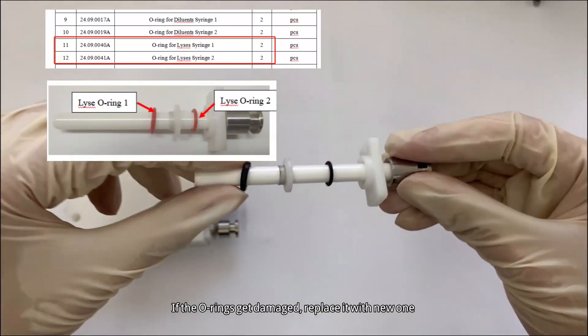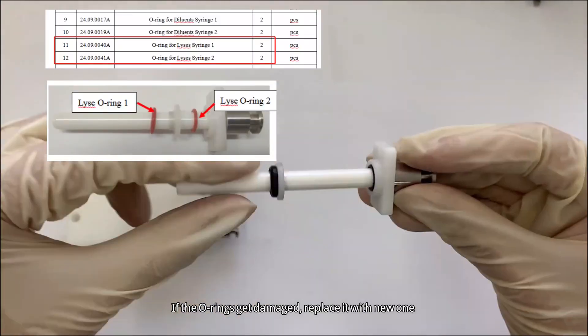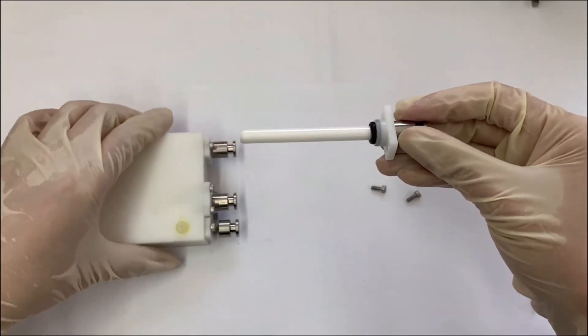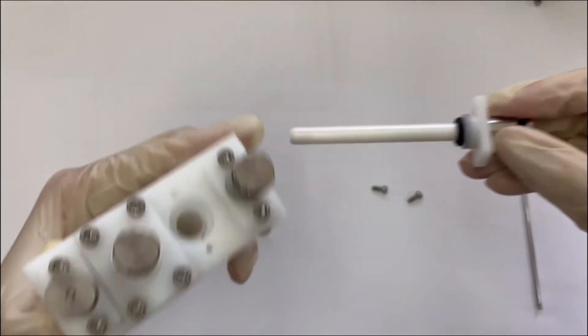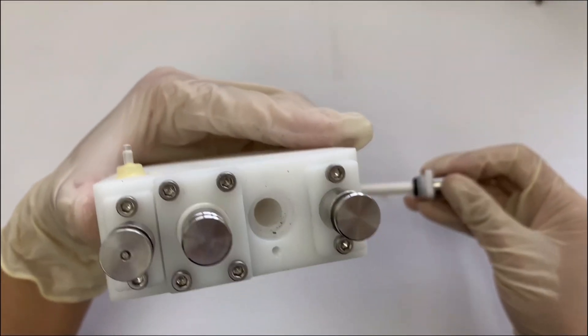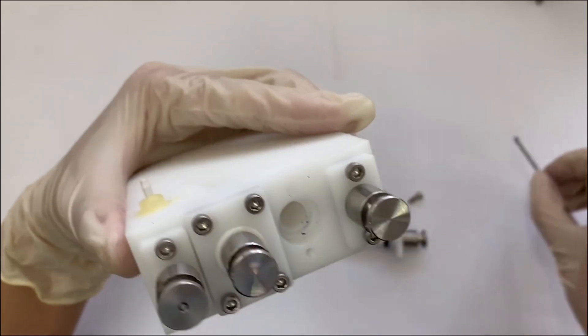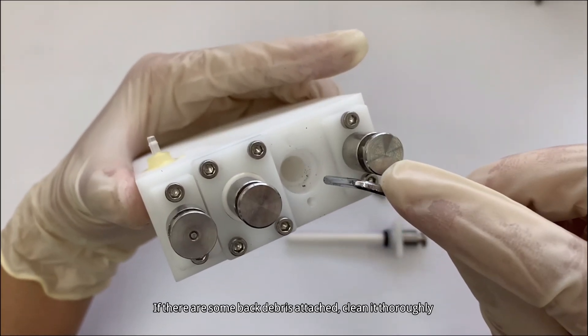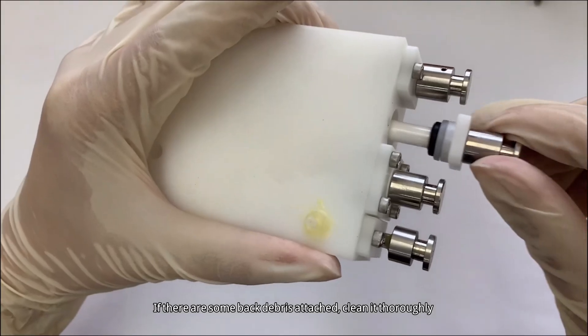If the O-rings get damaged, replace them with new ones. If there is some black debris attached, clean it thoroughly.